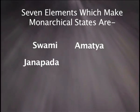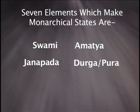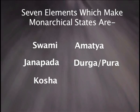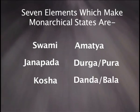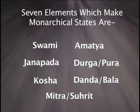The fourth element is Durga or Pura, the fortified urban area or, more specifically, the capital of the particular state. Then Kosha, that is treasury; Danda or Bala, that is armed forces; and the seventh and last is Mitra or Surit, that is friendly power or ally. All the theorists would invariably consider the Swami or the Raja as the foremost of all the elements or limbs of the state.